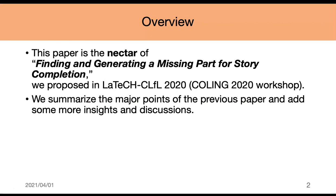For those who will watch this presentation later, I would like to explain what a nectar paper is. A nectar paper is a paper with a summary of our own work published in other conferences or journals that the author believes was worth sharing with the community. This paper, titled 'Missing Portion Prediction for Story Completion,' is a summary of our previous work, 'Finding and Generating a Missing Portion for Story Completion,' proposed at the fourth joint workshop on Computational Linguistics for Cultural Heritage, Social Sciences, Humanities, and Literature, co-held with COLING 2020. We summarize the major points of the previous paper and add some more insights and discussions.